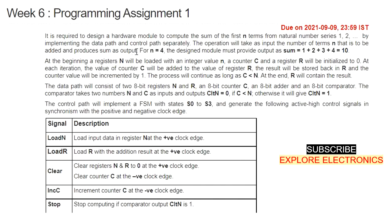For example, if N equals 4, the sum starts with 1 plus 2 plus 3 plus 4, giving a total sum of 10. At the beginning, register N will be loaded with the integer value N.